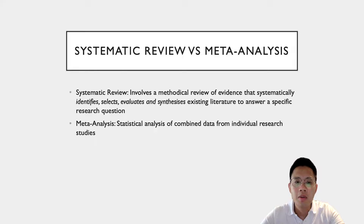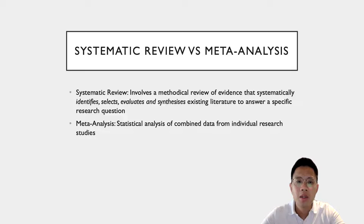Systematic reviews involve a methodical review of evidence that systematically identifies, selects, evaluates, and synthesizes existing literature to answer a specific research question. This is different from the run-of-the-mill review article that may be based on evidence but does not set out to actually review the entire body of evidence surrounding that research question, and hence does not go through this rigorous process of systematically looking at what evidence is out there pertaining to the topic at hand.